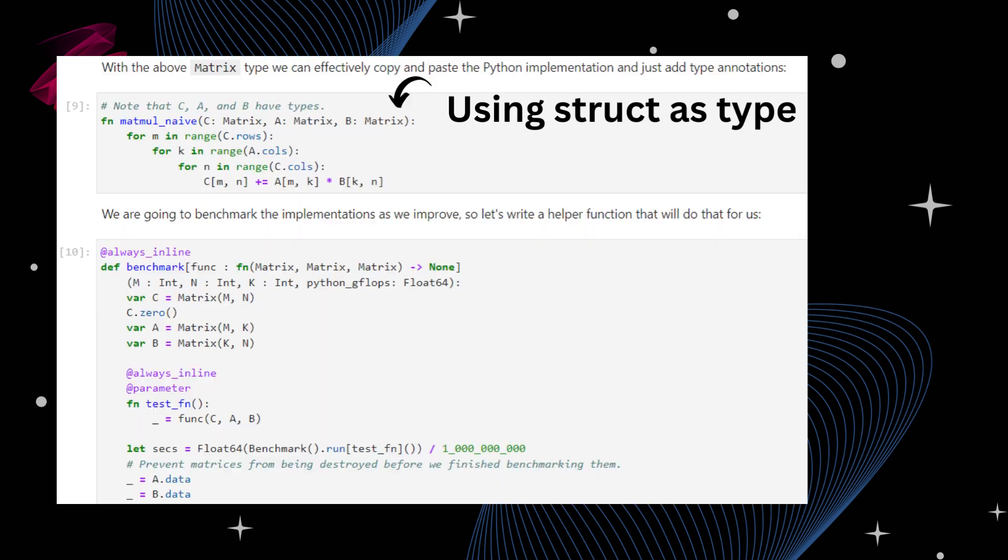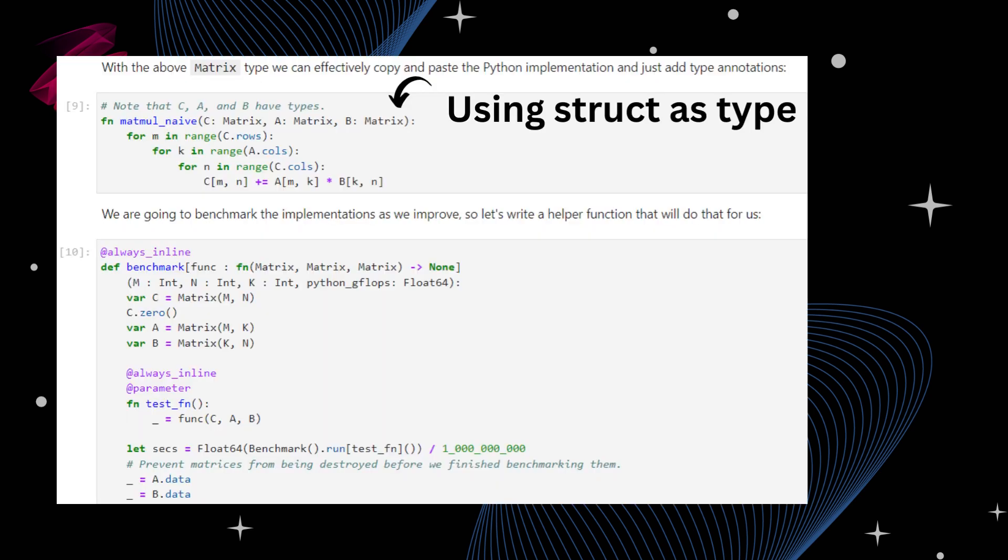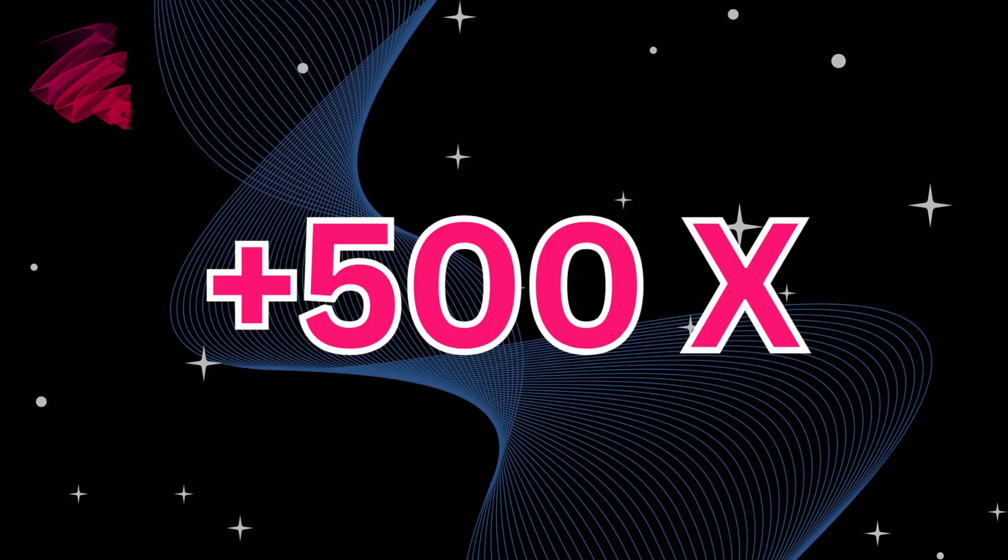Now coming back to the performance using struct as type. Now you can see that it is 500 times faster, which is not even near to the half of its performance.